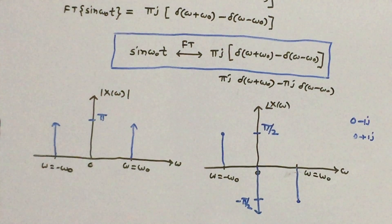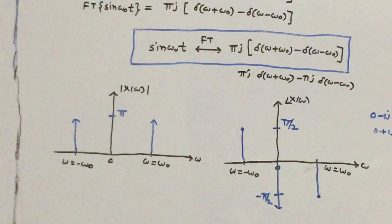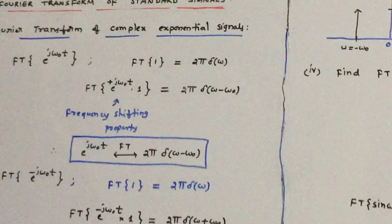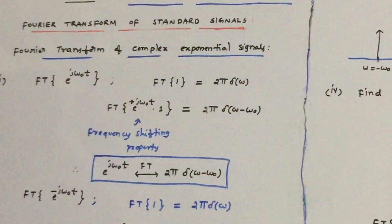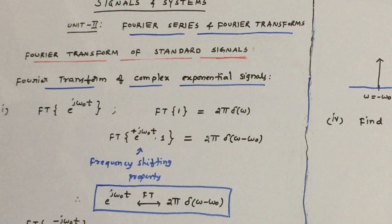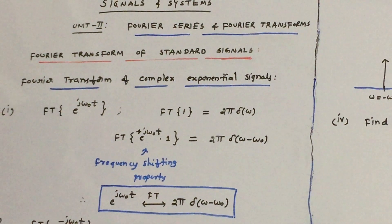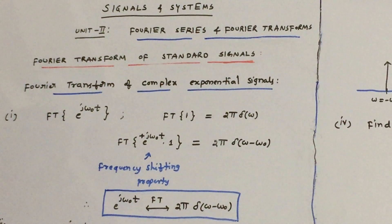This concludes the Fourier transform of standard signals: complex exponential signals, cos(ω₀t), and sin(ω₀t). Thank you.